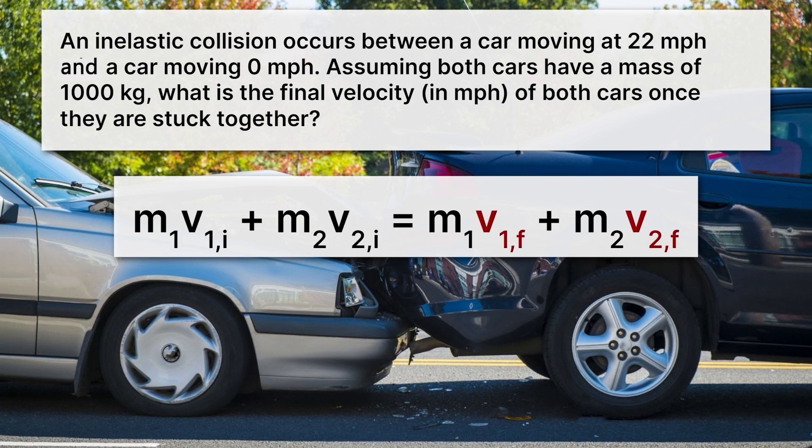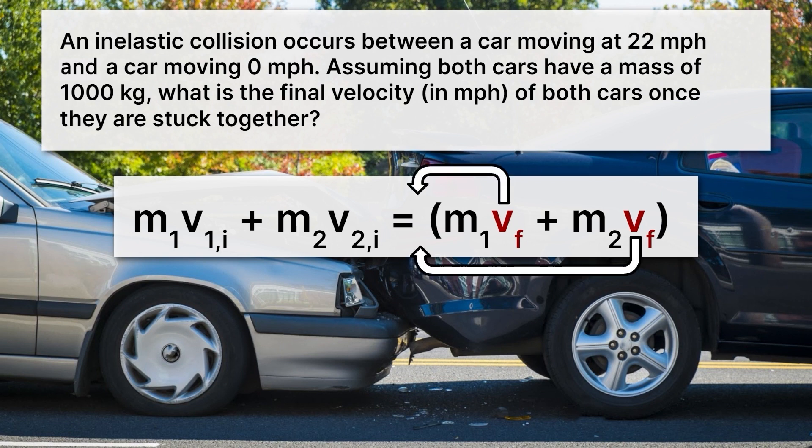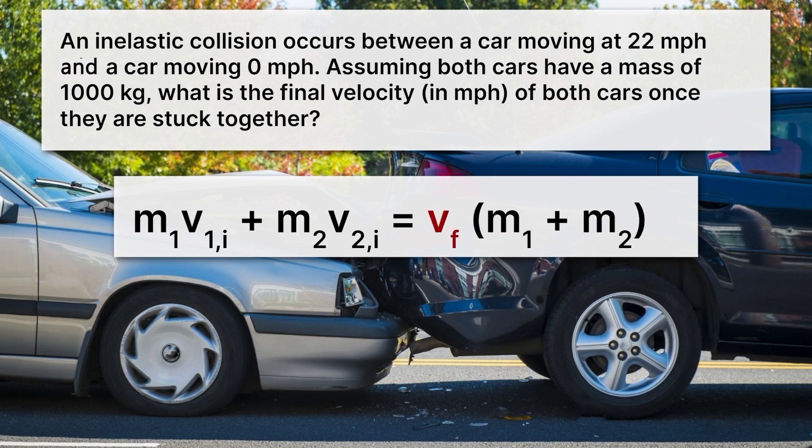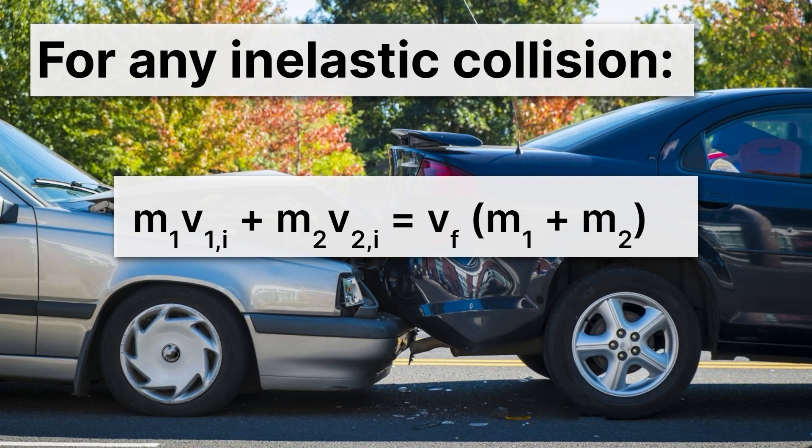Now here's the key trick in our problem. The velocity final for both cars, because they get stuck together, is the same. So those two variables are the same. We'll just drop the ones and twos. We'll just call it velocity final. There's only one final velocity and it's the same. Now because it's the same, we can actually go ahead and put parentheses around this and think about pulling out velocity final. And when we simplify it, we get this equation: velocity final times mass 1 plus mass 2. And that makes our life a lot easier. So for any inelastic collision, this is the equation you can use.